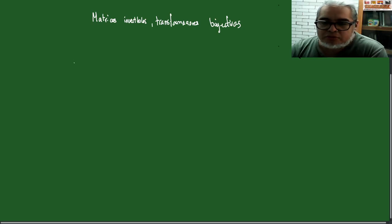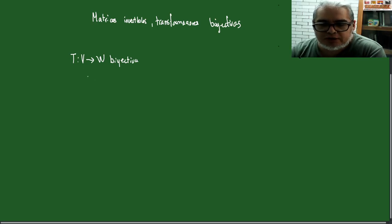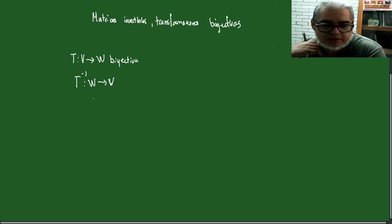Bienvenidos. ¿Cómo tendría que ser? Si tenemos una transformación biyectiva entre dos espacios, entonces estamos suponiendo que tengo la T inversa, que va de W en B, que es sobre y que es inyectiva.